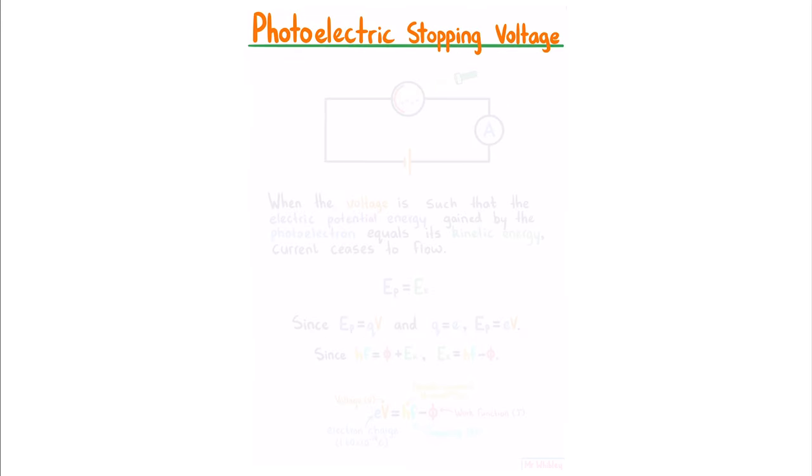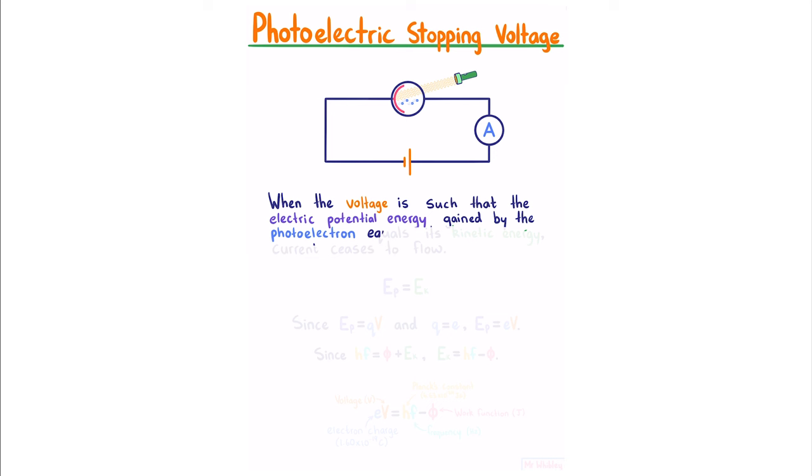Photoelectric stopping voltage. Consider the following circuit with a photoelectric cell, a voltage source, and an ammeter. When the voltage is such that the electric potential energy gained by the photoelectron equals its kinetic energy, current ceases to flow.